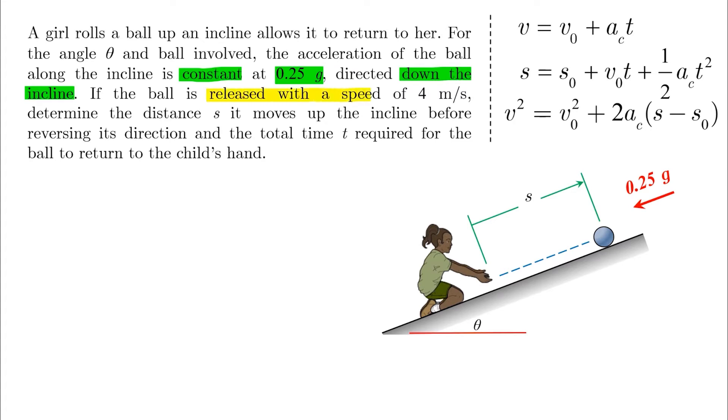If the ball is released with a speed of 4 meters per second, which is our v₀, determine the distance s it moves up the incline before reversing its direction. Here is our hint: v before reversing direction is equal to 0.